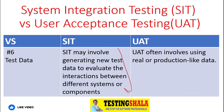The sixth key difference is in terms of data used during testing. In SIT, data is normally created by the testers or developers, whereas UAT data is more of a production-like data used by end users or customers. So these are the six important key differences between System Integration Testing versus User Acceptance Testing.